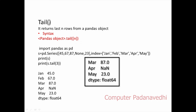Next is the tail() function — the opposite of head(). It returns the last rows of the series. For example, with months like March, April, and May, tail() fetches the last elements from the bottom.